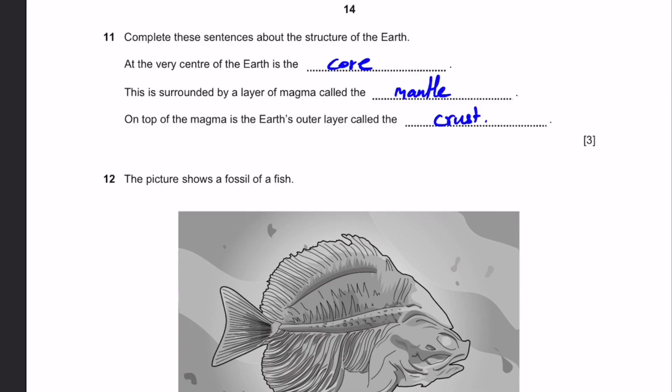Question 11. Complete the sentences about the structure of the Earth. At the very center of the Earth is the core. It's surrounded by a layer of magma called the mantle. On top of the magma is the Earth's outer layer called the crust. That's the answer.